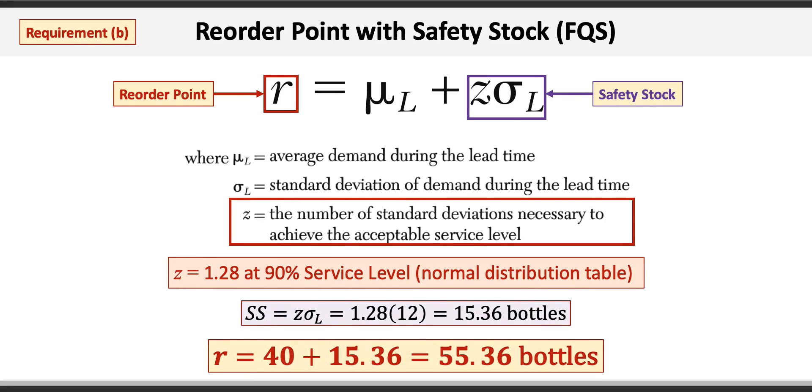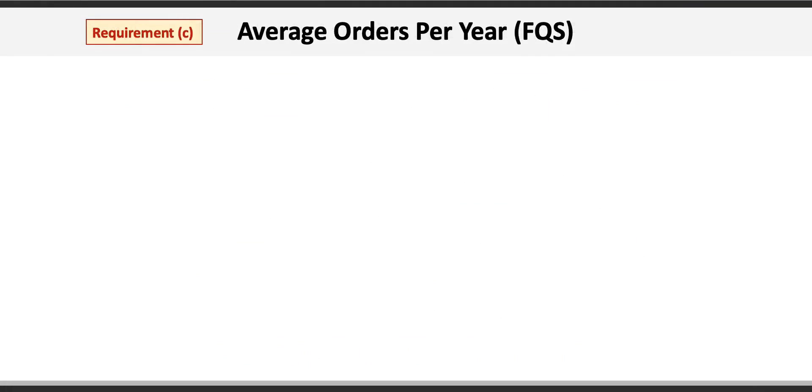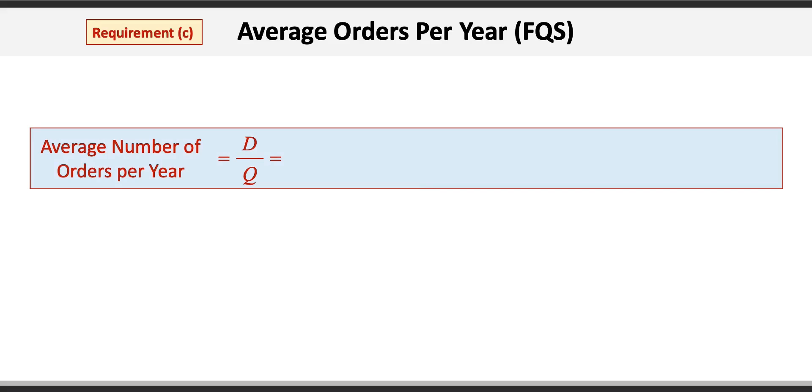Now on to requirement C, or the average number of orders per year. The formula for this is D divided by Q, where D is the demand and Q is the EOQ. The demand is 10 boxes per week times 48 weeks, and the EOQ is 56.6 bottles calculated in requirement A. This gives us 480 divided by 56.6, or 8.48 orders per year.